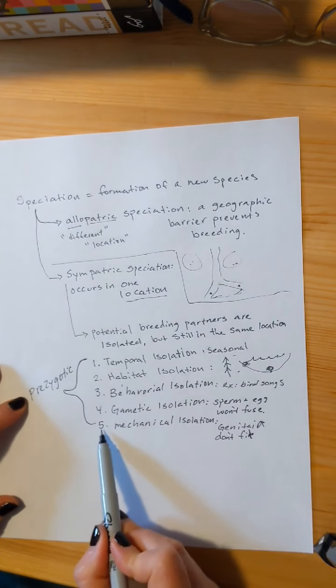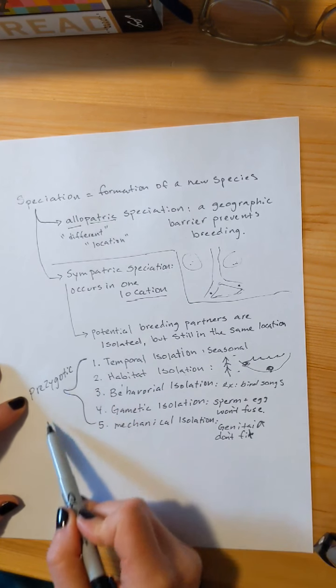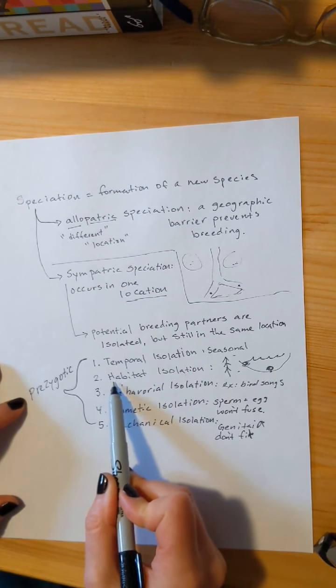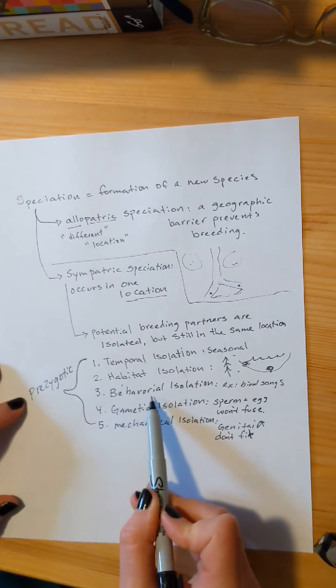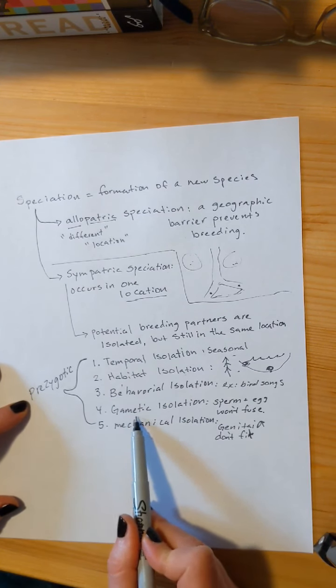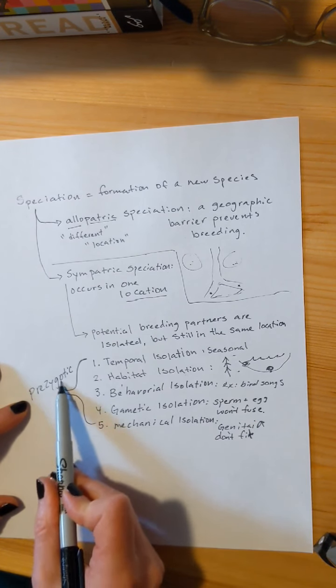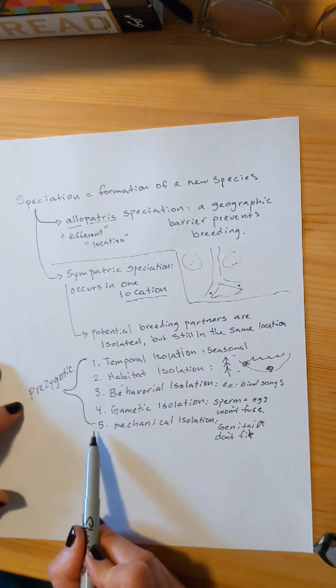Now these five types of sympatric speciation are all prezygotic. Each of these prevented a zygote from forming. You couldn't get together because you were in the wrong season, or the wrong habitat, or the bad behavior. Or you tried to get together, but you couldn't get your sperm and your egg to fuse, so there was no zygote.